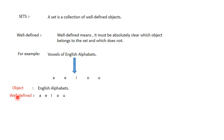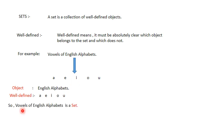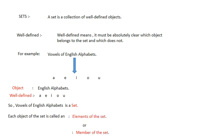And here the well-defined part is A, E, I, O, U. In our example, vowels of the English alphabet - you can list them, so it is properly well-defined. Therefore, we can say that vowels of the English alphabet is a set, as we can list all the vowels.